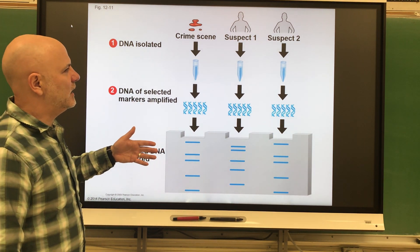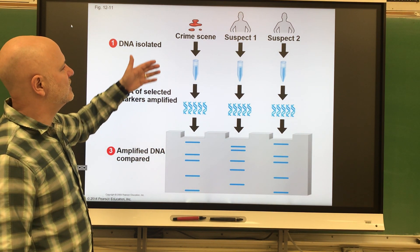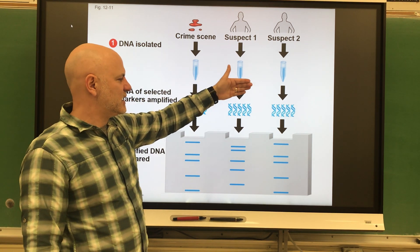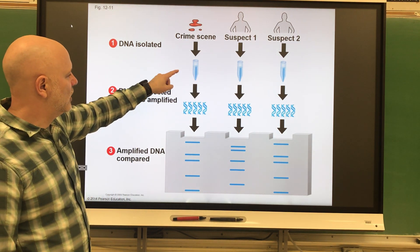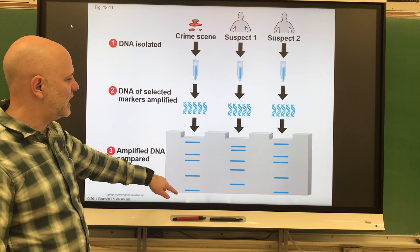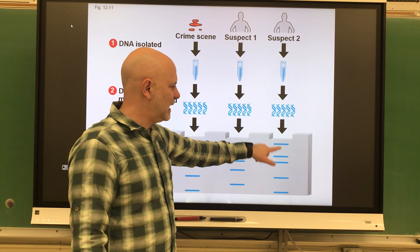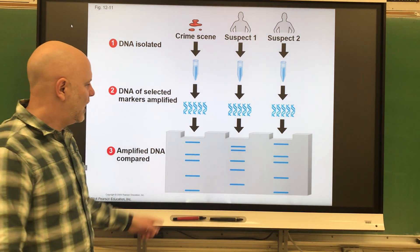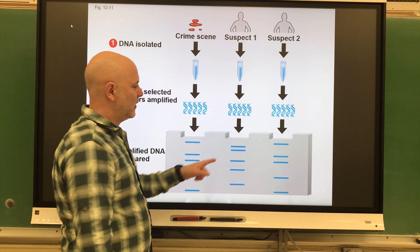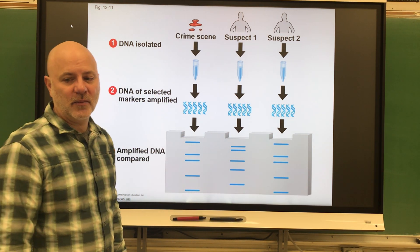What we do is take some blood from a crime scene and then compare this to different suspects. This shows the banding pattern from the blood from the crime scene. This person over here has the same banding pattern, and they would say this is more than likely the person who committed the crime. We know for sure that person didn't commit it.